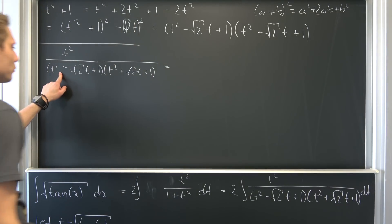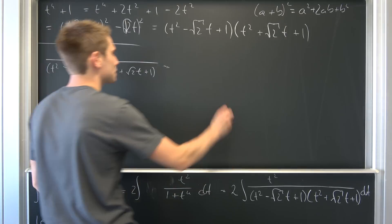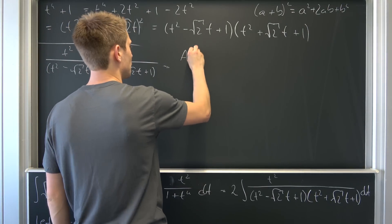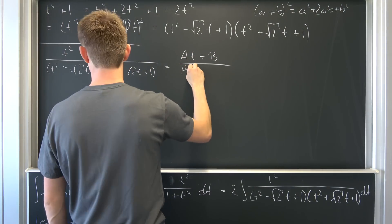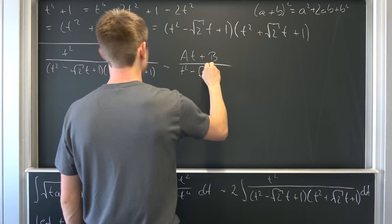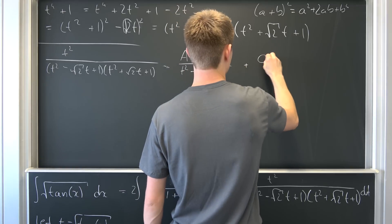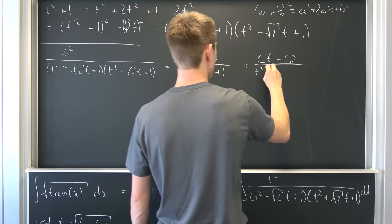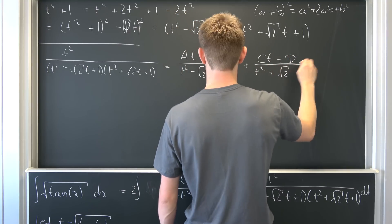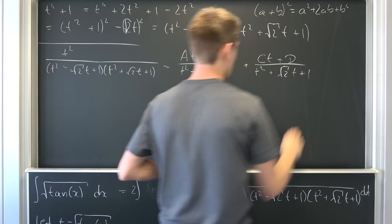Let's see. So we have second degree polynomials down here. That means we have to have at plus b up here over this first factor. So t squared negative square root of 2 times t plus 1 and also the second one. c times t plus d over t squared plus positive square root of 2 times t plus 1.